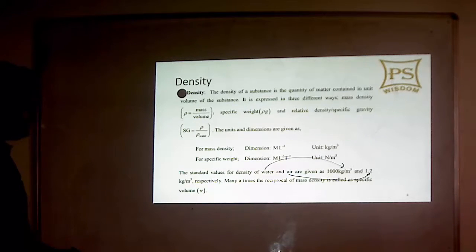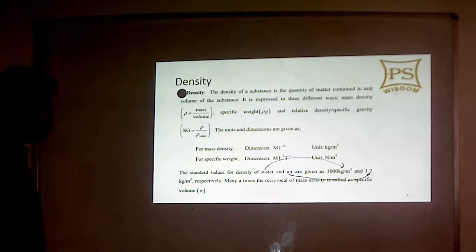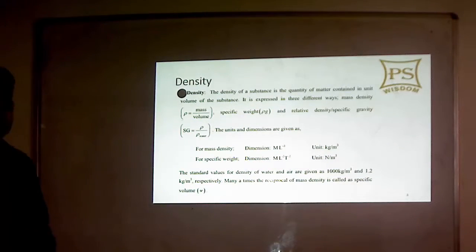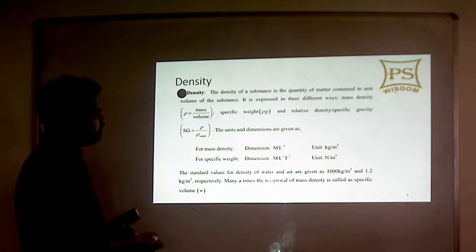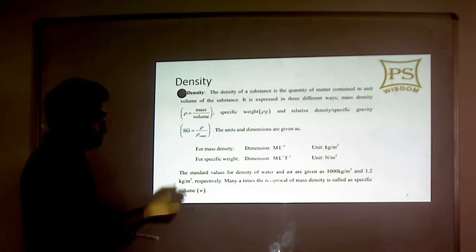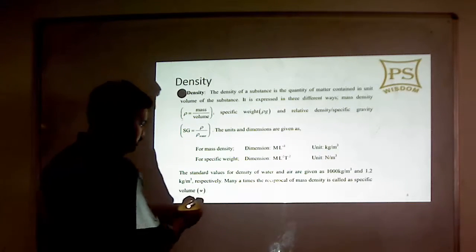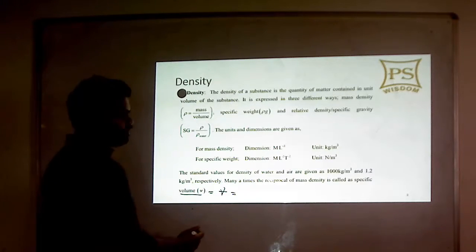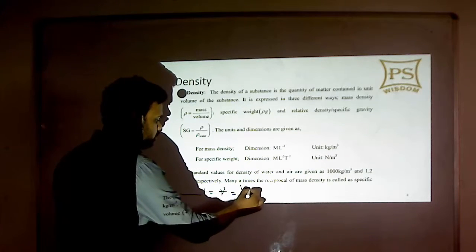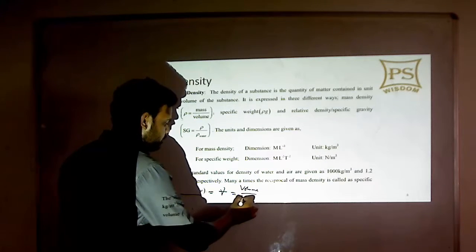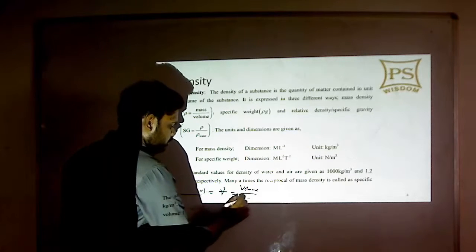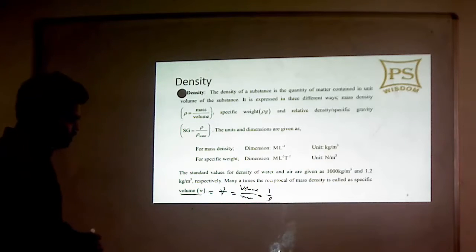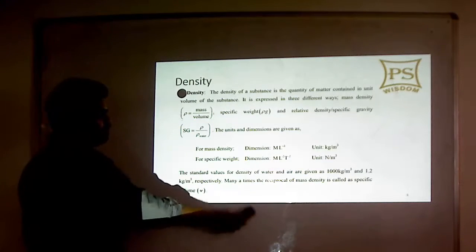The reciprocal of mass density is called specific volume. Specific volume is the volume upon mass — that is, 1 upon rho.